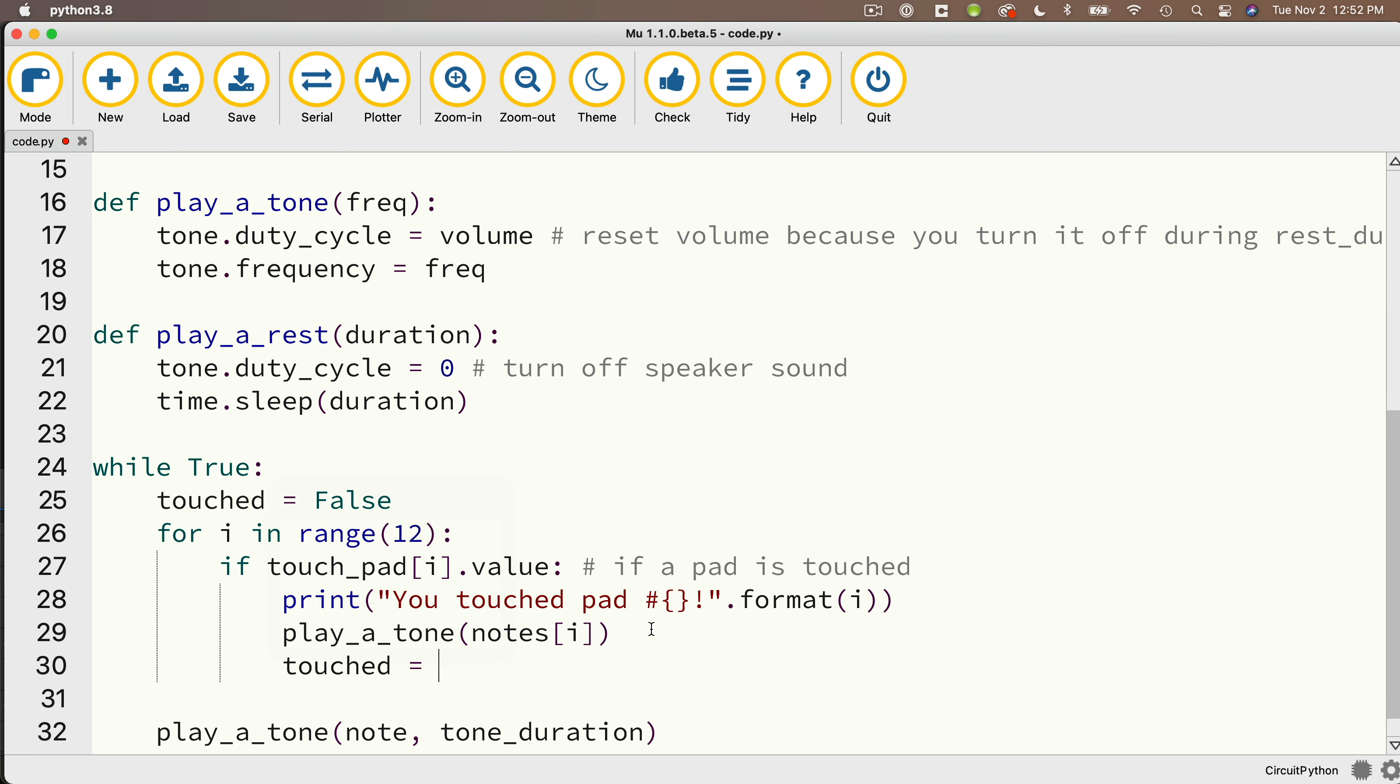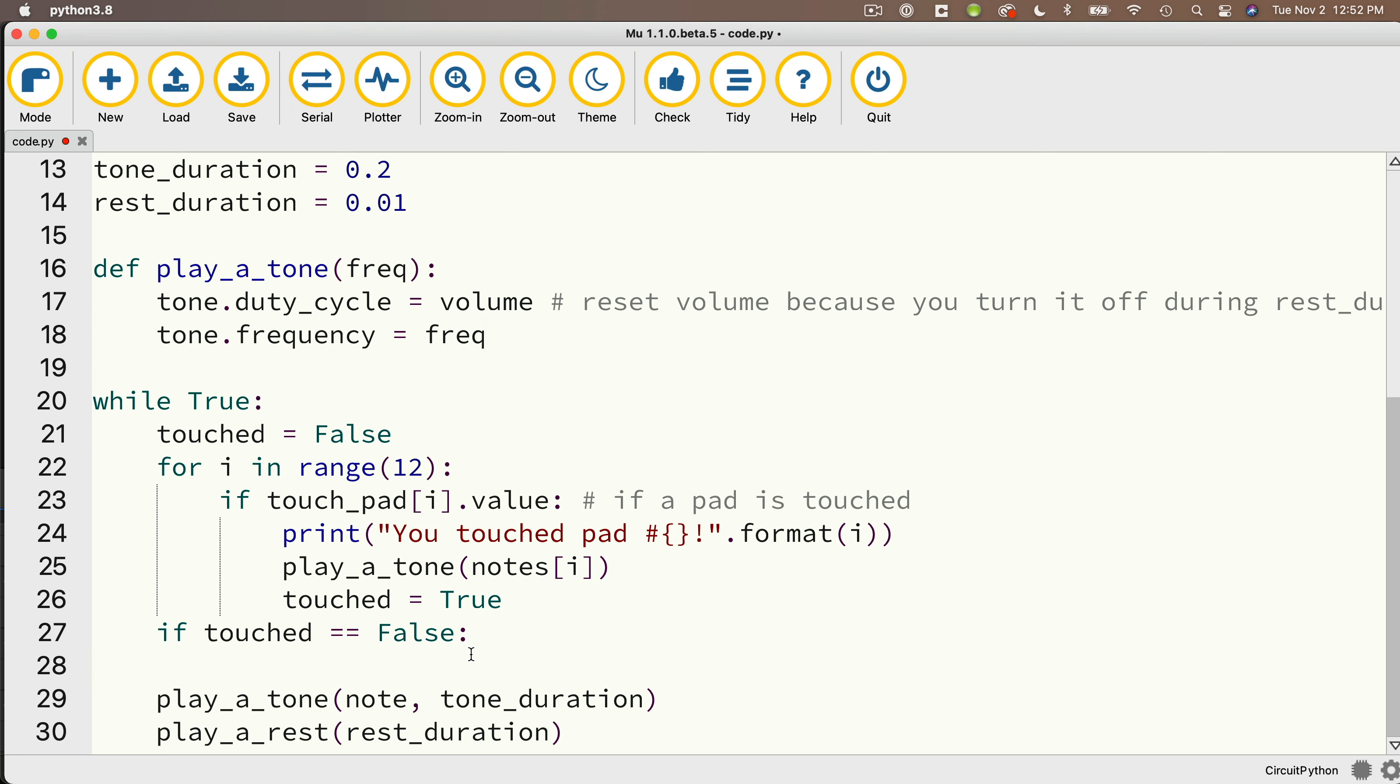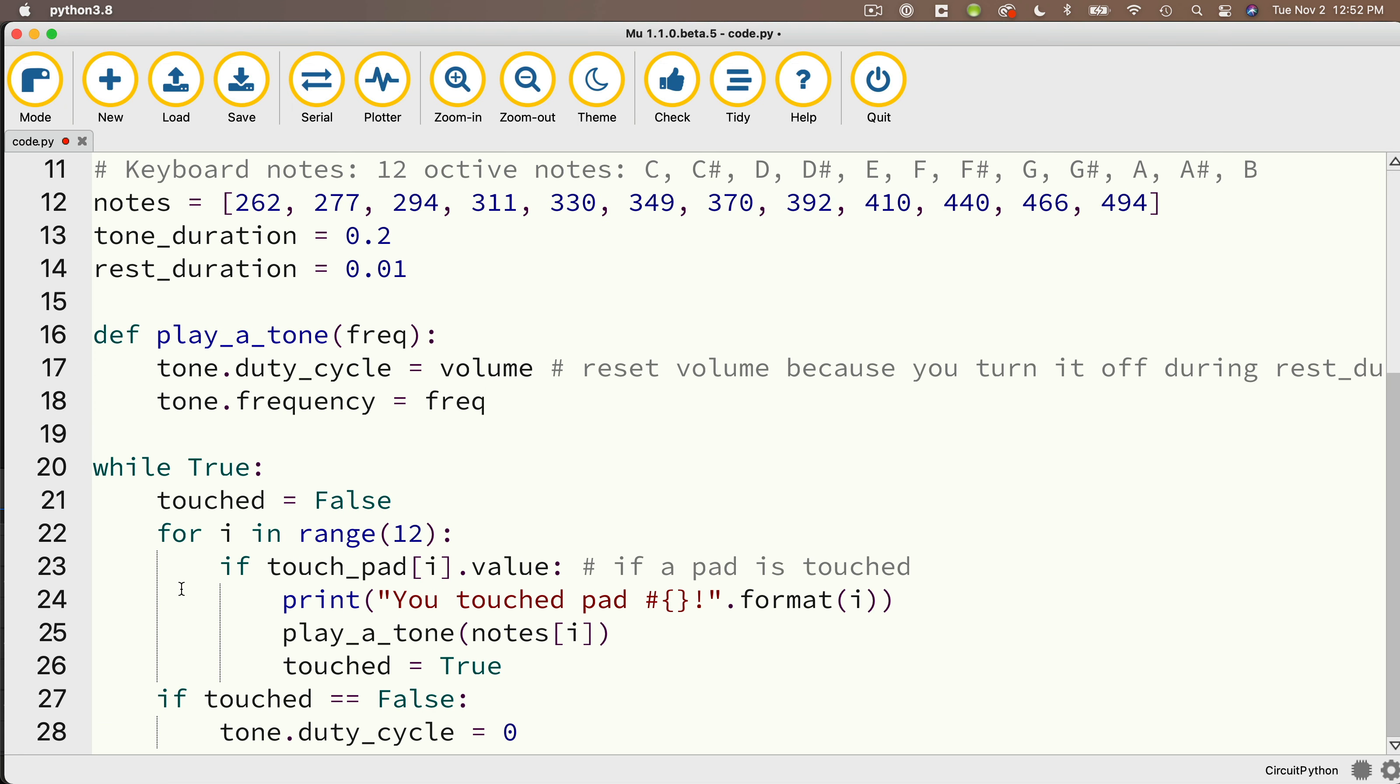So up in play_a_tone I'm going to delete the duration. I'm also going to delete the time sleep at the end and that's our function. Then remember under play a tone we want to also flag that touched is true. So we'll say touched equals true and then we'll out dent so that the if statement is going to be even with the for statement and we'll say if touched equals equals false colon then what we want to do is we want to shut off any sounds that might be playing. So I'm not going to call the play a rest function. I'm simply going to copy this statement here tone.duty_cycle. Remember when we set the duty cycle equal to zero we shut off any sounds that are playing. Then since that's the only line of code that I need I'm going to delete this entire function play_a_rest. Then below the if statement I'm going to paste in tone.duty_cycle equals zero. Then I can get rid of any extra statements that were down below here. And this is our code, this should work.